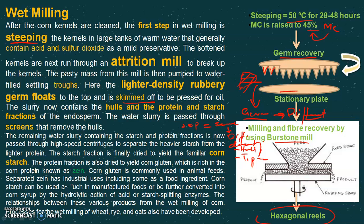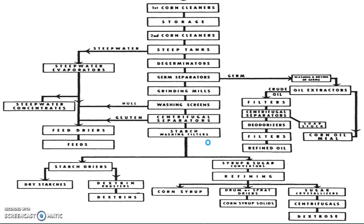Finally, we get pure starch and pure protein of corn — the protein is known as zein. Corn starch has different applications in the food industry and can be used for various food processing purposes. Hope you understood this. Thank you for watching.